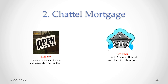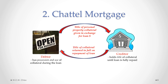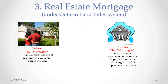In a chattel mortgage, the title of the personal property being used as collateral is given by the debtor to the creditor in exchange for the money loaned. When the loan is fully repaid, that title is returned by the creditor to the debtor. If there is a loan default, the creditor can seize the collateral — a repossession — and sell it to repay the loan.